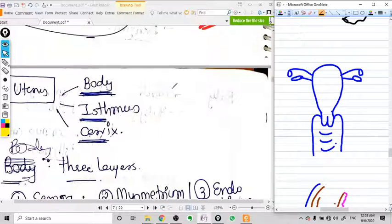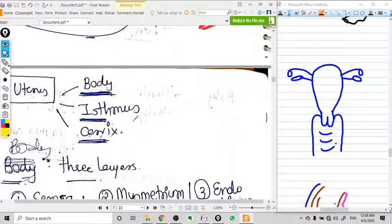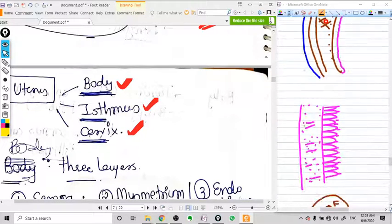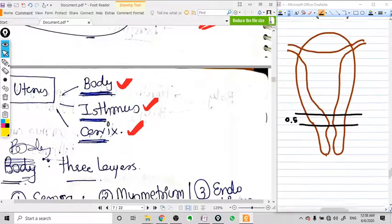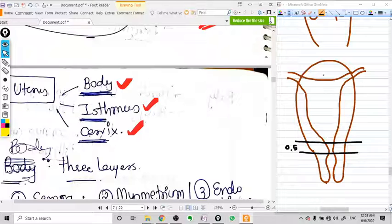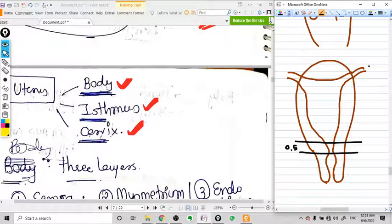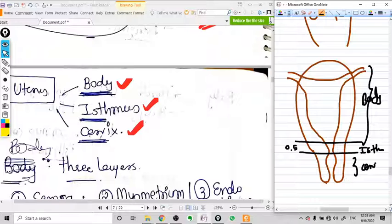The uterus is divided into three basic parts. Actually it is only divided into two parts, like the body and cervix, but for explanatory purposes we also include isthmus. This is the body of the uterus, this part is called isthmus, and this lower part is the cervix.